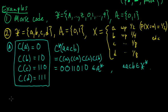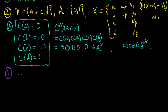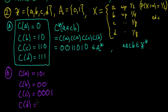Let's define Code B: c(a) = 101, c(b) = 00, c(c) = 0001, c(d) = 1. That's code B.